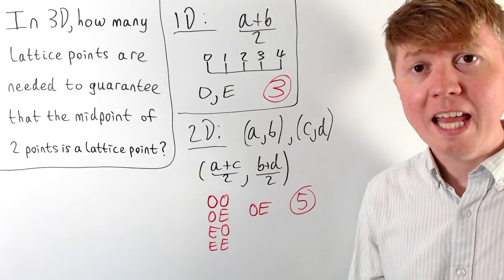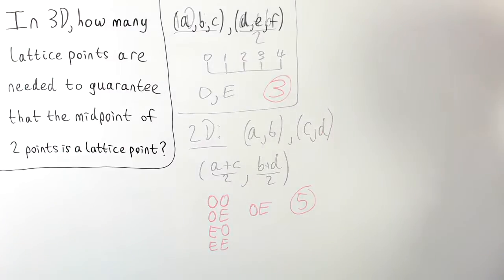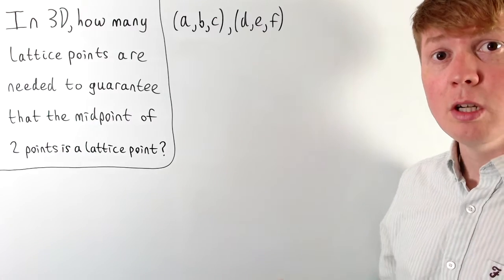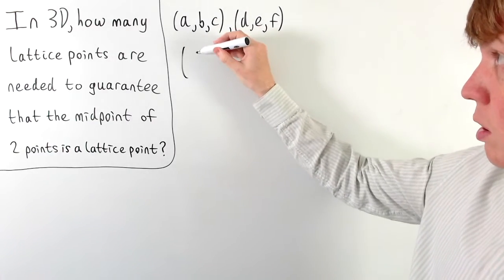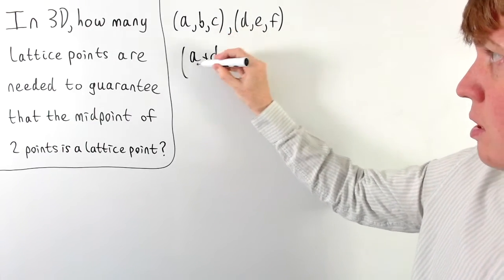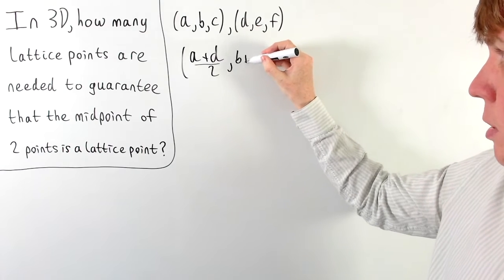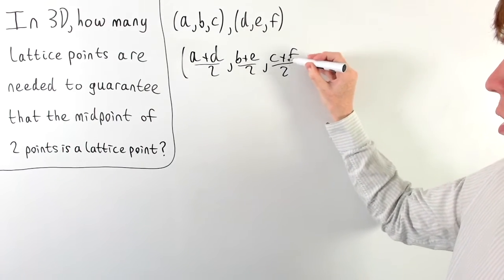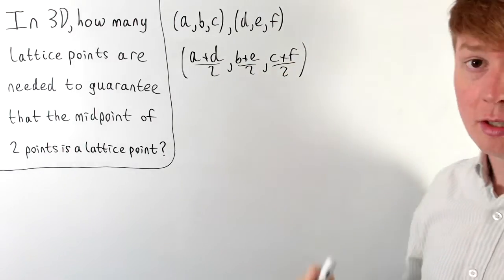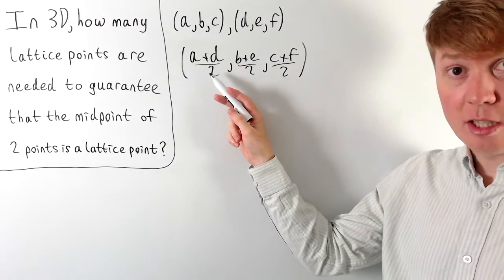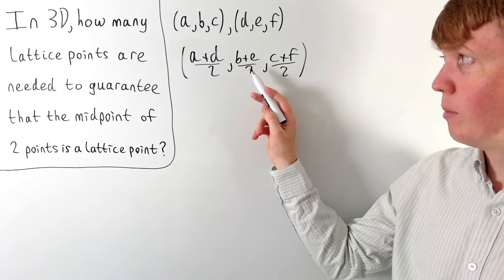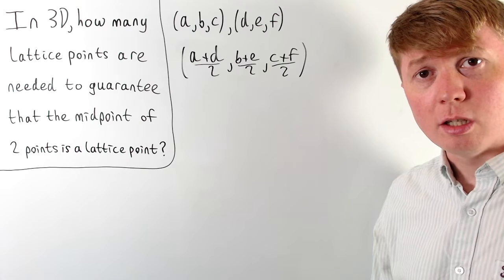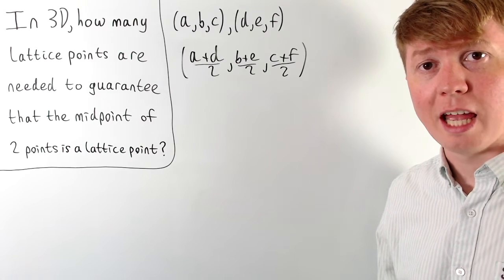Now looking at 3D: we find the midpoint between two points in the same sort of way. For example, the midpoint between points (a, b, c) and (d, e, f) will have coordinates (a + d) / 2, (b + e) / 2, and (c + f) / 2. In order for all of these to be integers, you need the parity of a and d to be the same, b and e to be the same, and c and f to be the same. So how many different combinations are there for the parity of each coordinate entry?